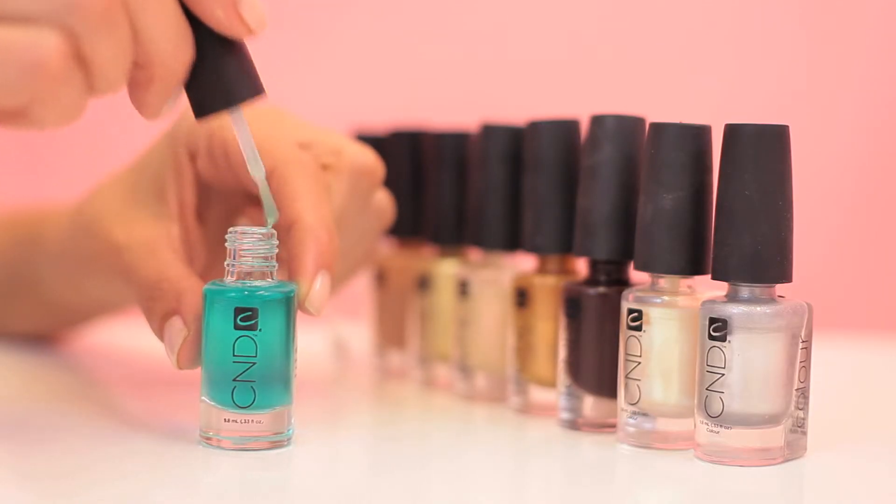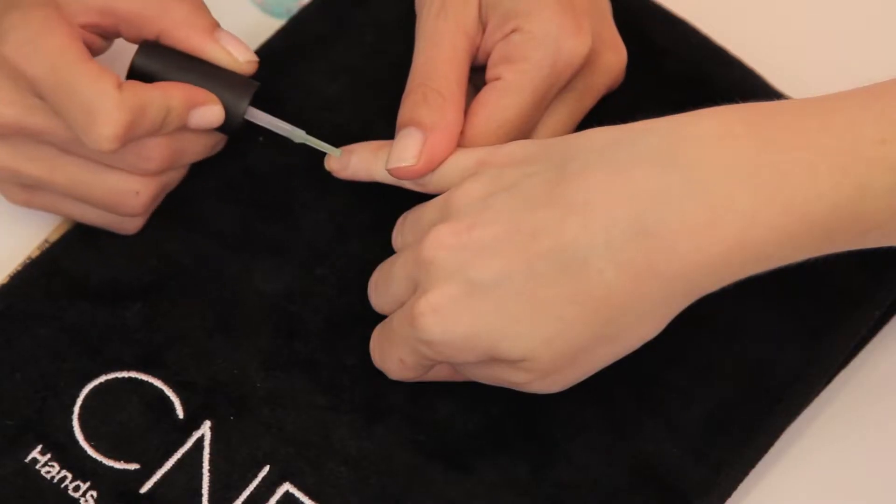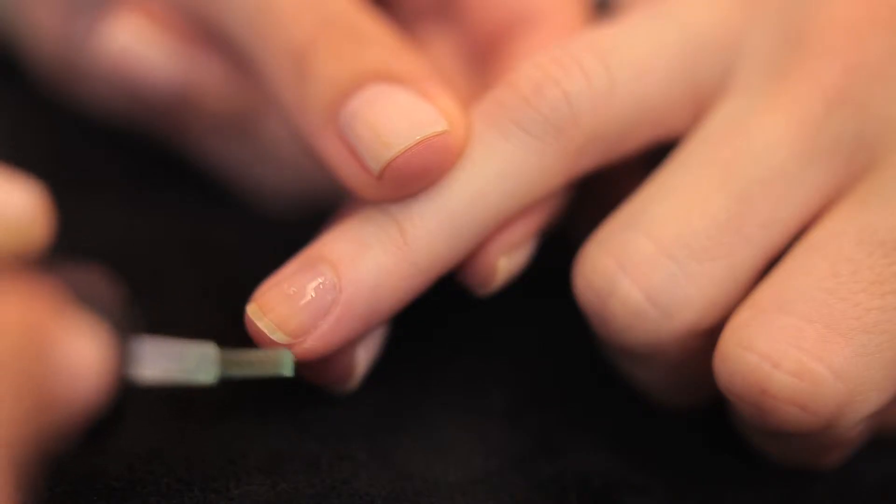We start the manicure, as always, by applying the C&D Sticky Base Coat, which helps to anchor the color. Be sure to seal the extension edge.